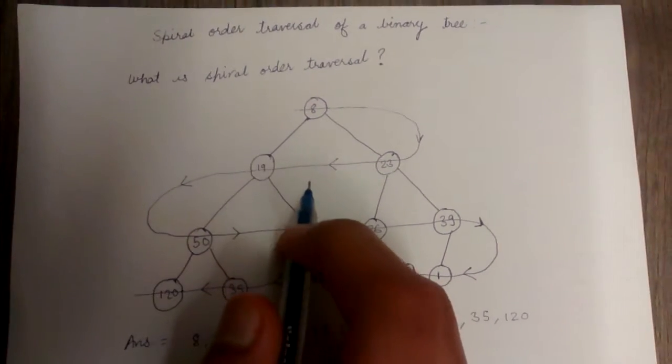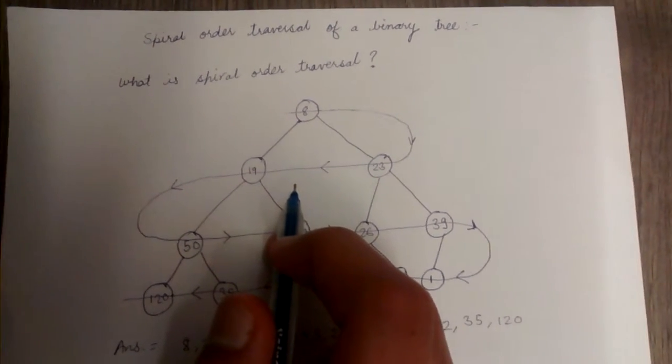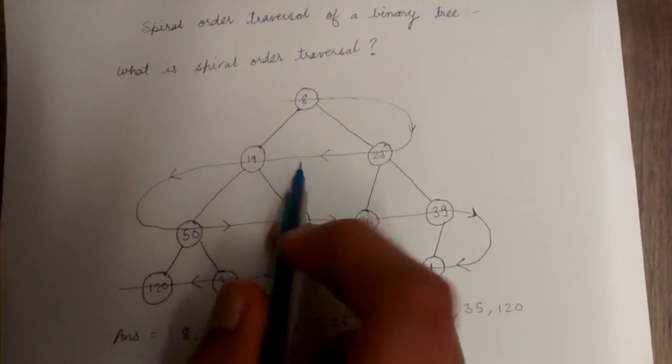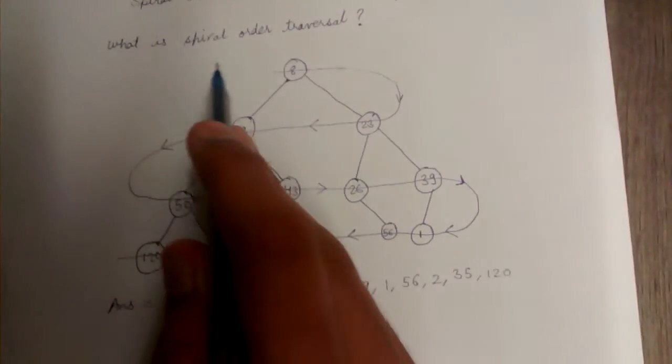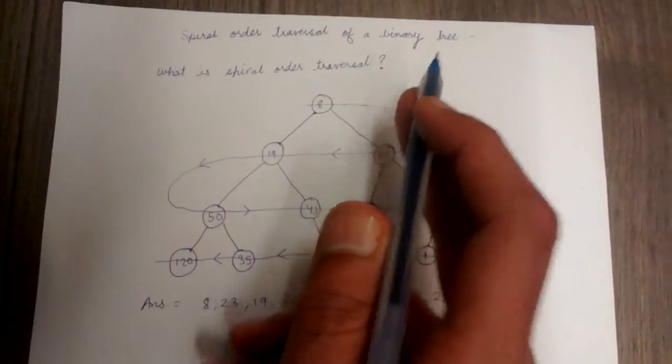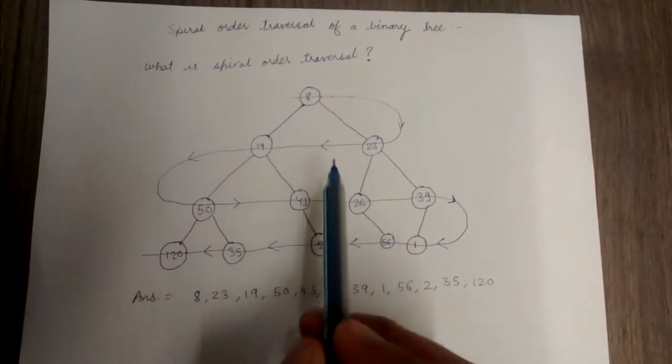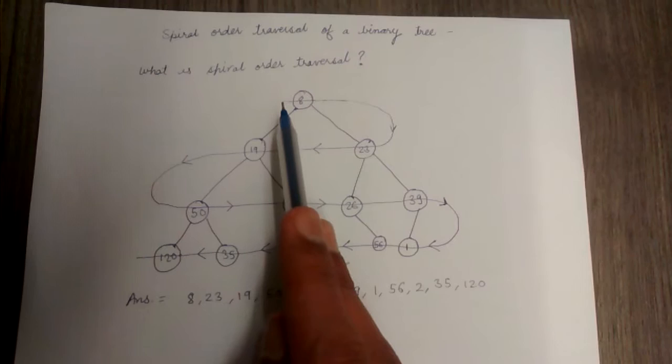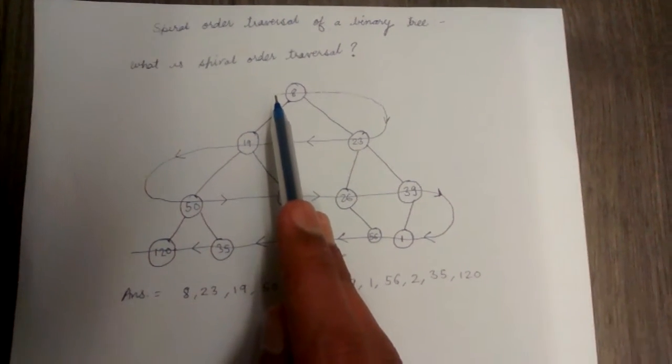Hello friends, today we will learn about the spiral order traversal of a binary tree. First of all, we will see what is spiral order traversal. Spiral order traversal is the traversal of a binary tree in a spiral form.